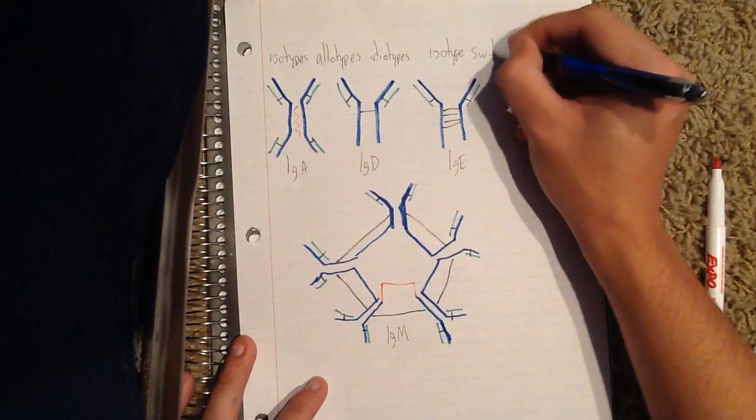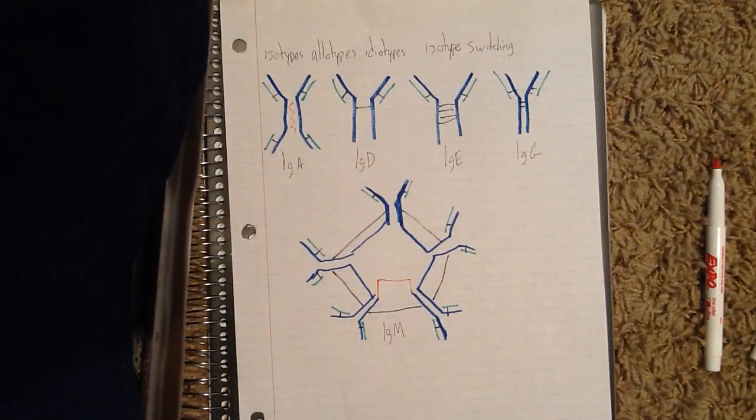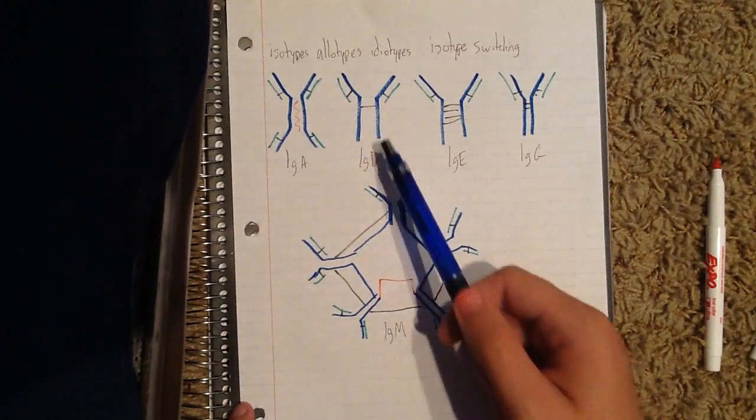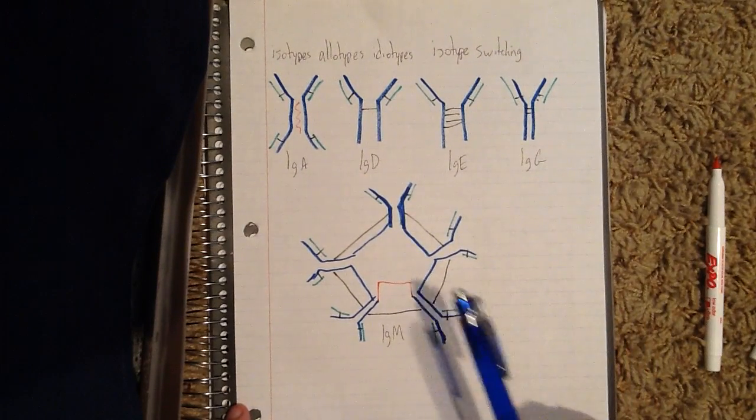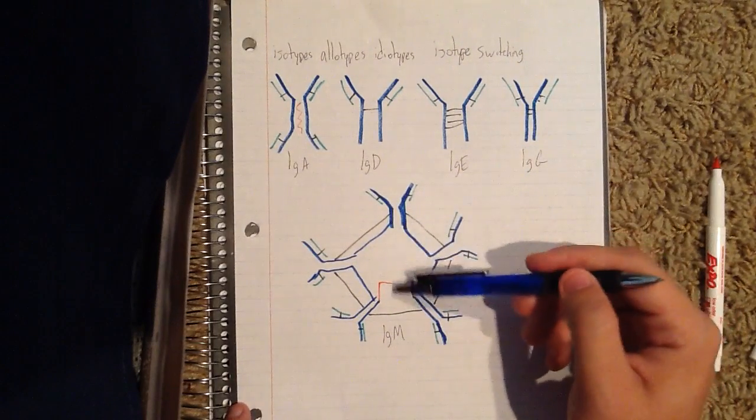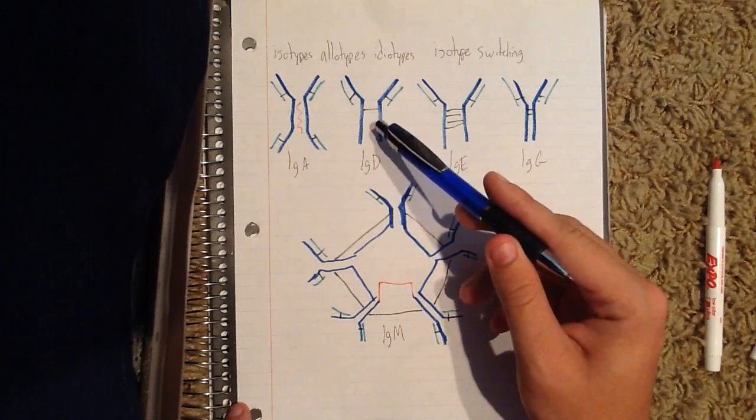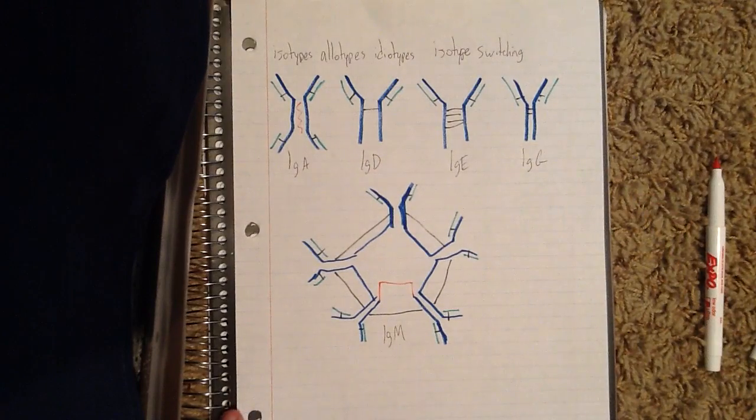Isotype switching means that they can cause the production of antibodies to change from an IgM or an IgD molecule to the other isotypes, if they're needed. So they can change from the IgM and the IgD molecules, and they can change production of that to the IgA, IgE, and IgG molecules.